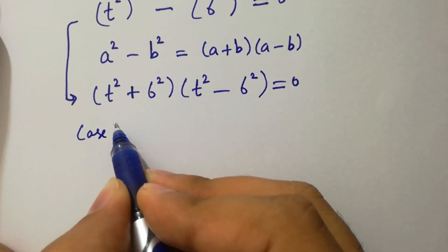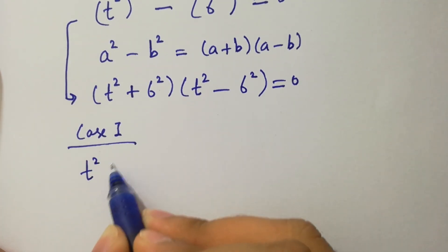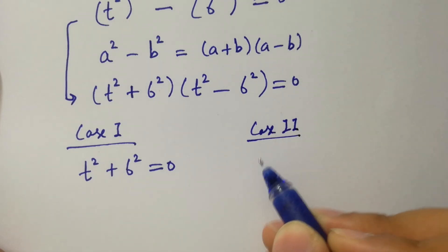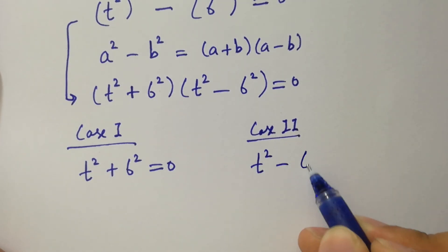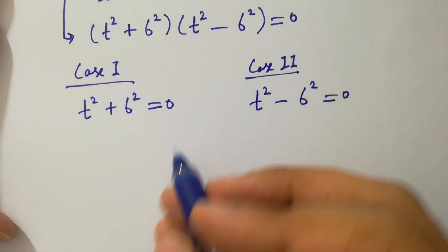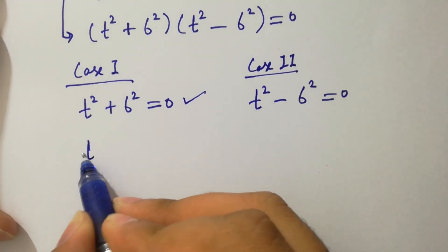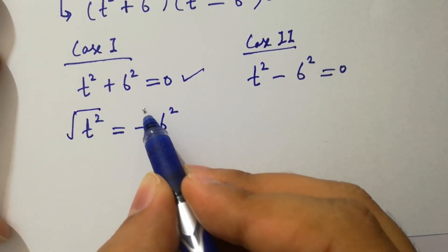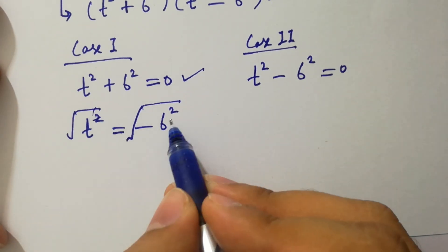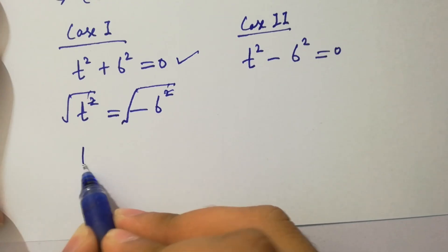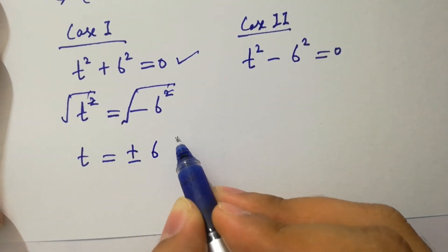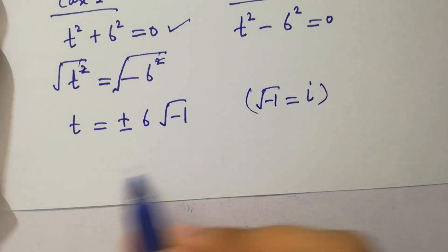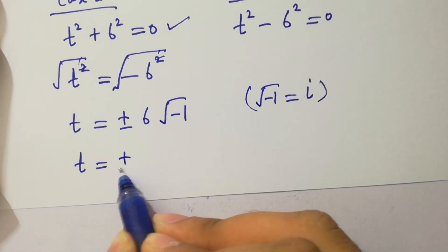So we have two cases here. Case one: t² + 6² equals 0. From case one, we have t² equals minus 6². Taking square root on both sides, the square cancels, so t equals plus or minus 6 times the square root of minus 1. Since the square root of minus 1 equals i, it will be t equals plus or minus 6i.